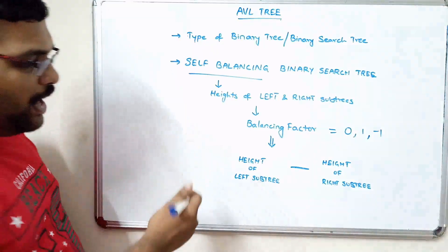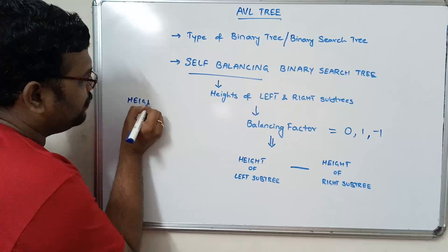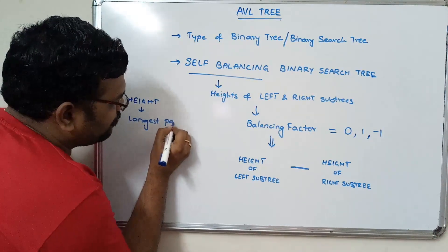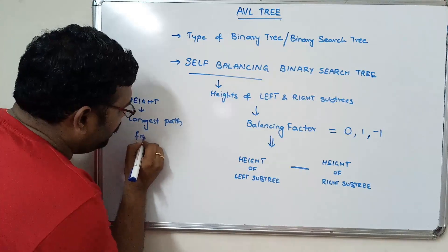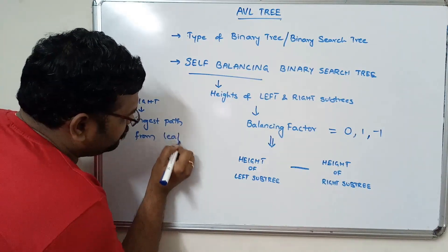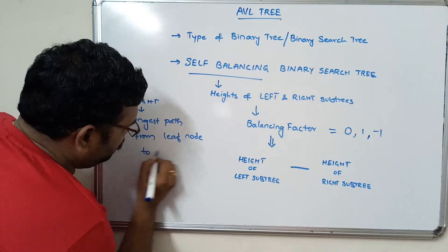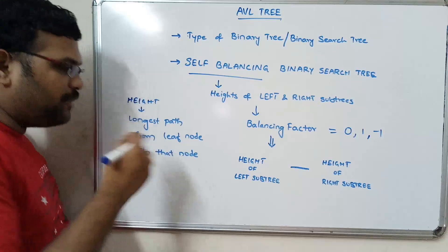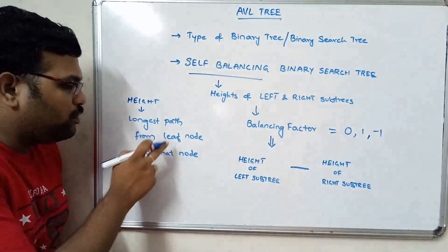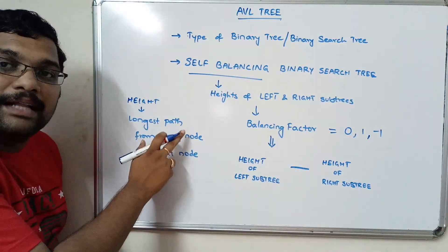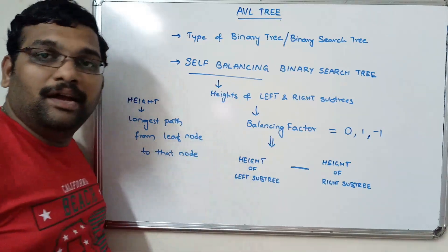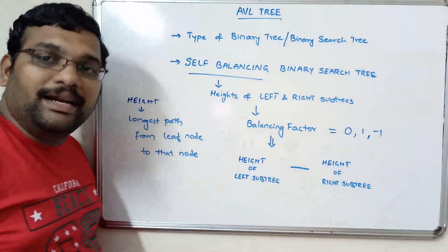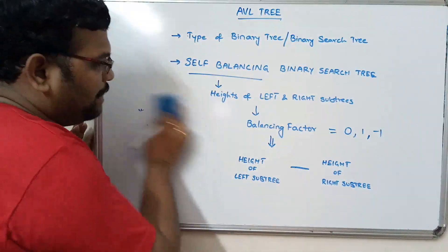First of all, how to calculate the height? The height is the longest path from the leaf node to that node. So from the leaf node to that particular node, the longest path gives the height of a node. Height of left subtree minus height of right subtree — we'll see an example to clarify.